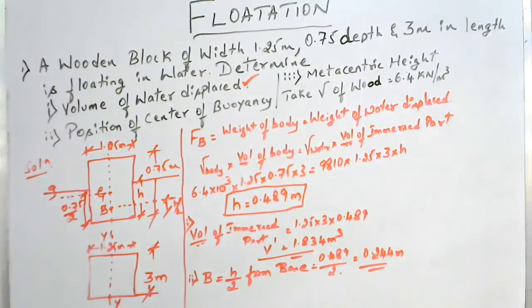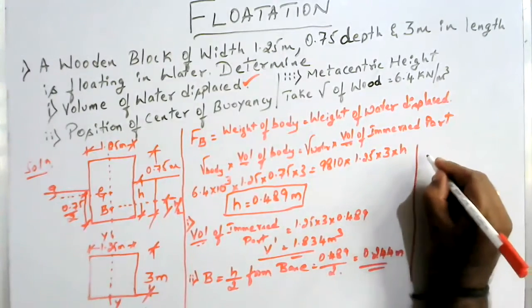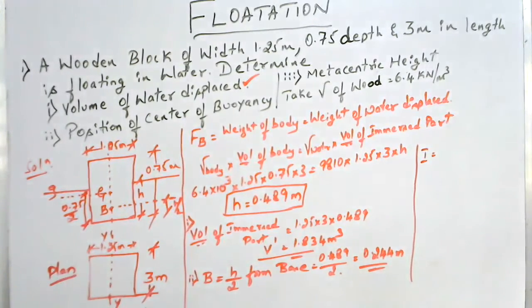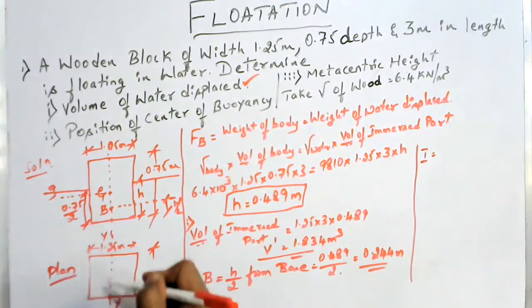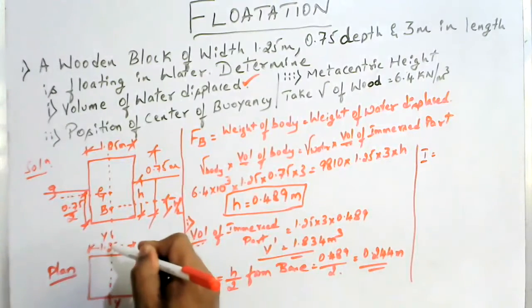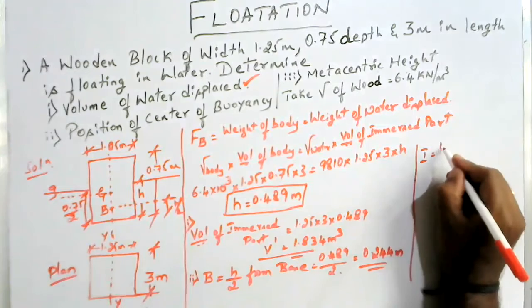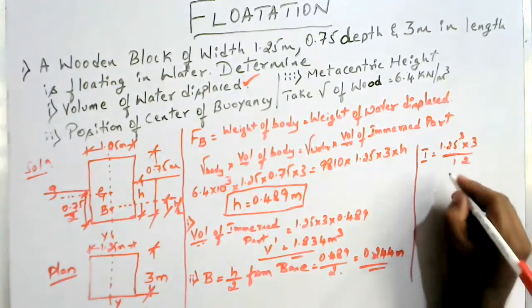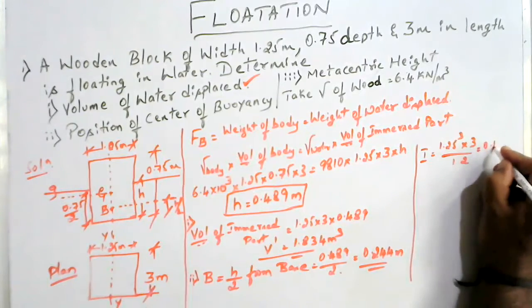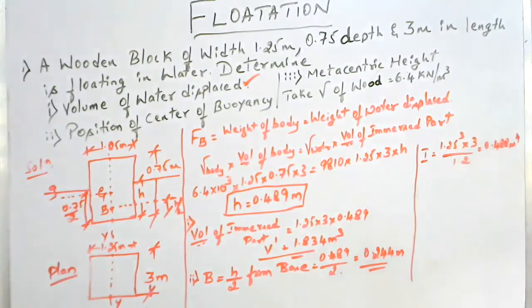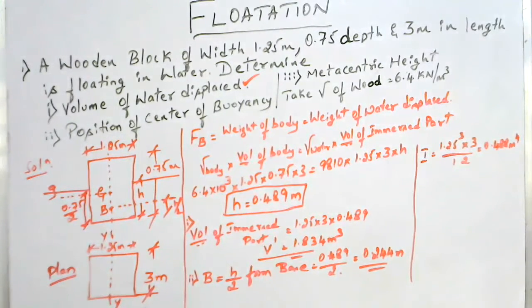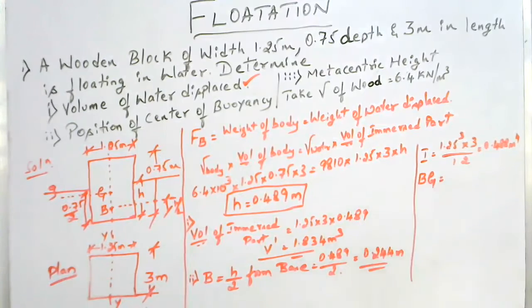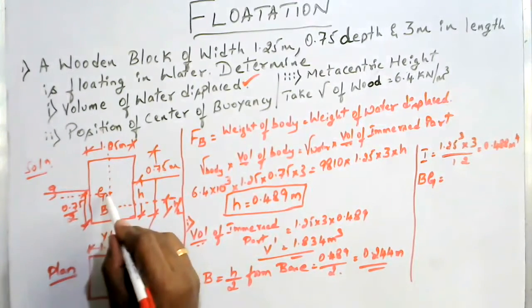The third part is the metacentric height. To find the metacentric height we need to find I — the moment of inertia of the plan area. Since the plan is rectangular in shape, I_yy equals b-cubed times d divided by 12. Here b is 1.25 and d is 3, divided by 12. You get I equal to 0.488 meter to the power of 4. Next, to find the metacentric height, we need BG.